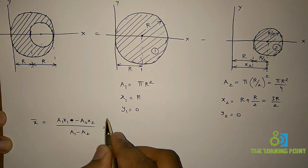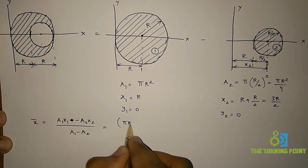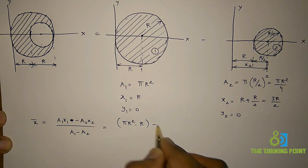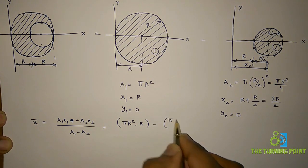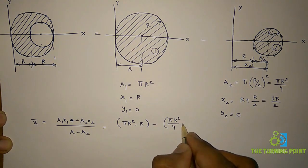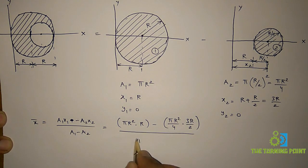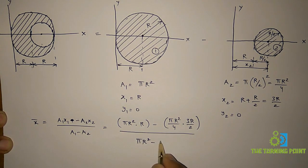Just substitute the values of a1 x1 a2 x2. a1 is pi r square into x1 is r minus a2 is pi r square divided by 4 into x2 is 3r divided by 2, all over pi r square minus pi r square divided by 4.